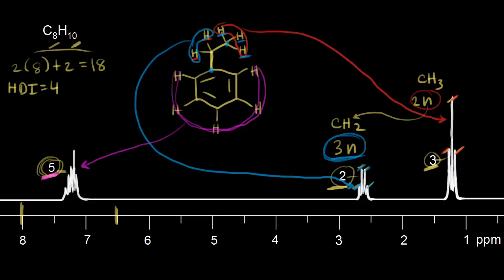Count up all your atoms: there are eight carbons — six on the ring, then seven and eight from the ethyl group. Count all the hydrogens and you have ten accounted for as well. So this is the NMR spectrum for ethylbenzene, which was a little bit easier than the previous example.